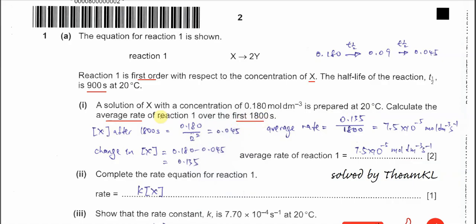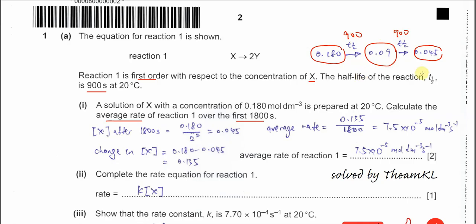Because it's asking for the average rate, we must get the concentration change during this time. The half-life is 900 seconds, so going through two half-lives means 900 plus 900 equals 1,800 seconds. Starting at 0.18 mol per dm³, it reduces by half to 0.09, then by half again to 0.045 after another half-life. So the concentration after 1,800 seconds is 0.045 mol per dm³.